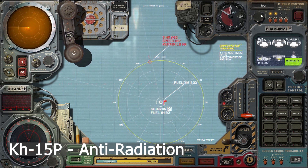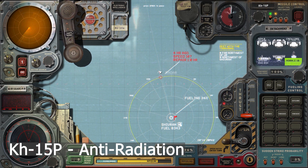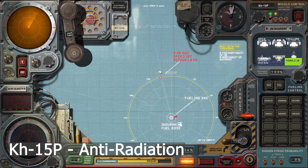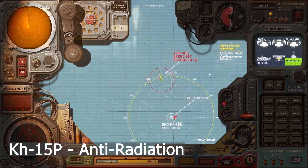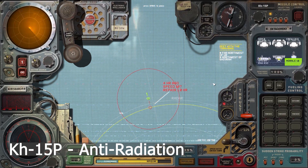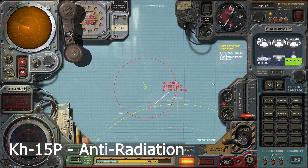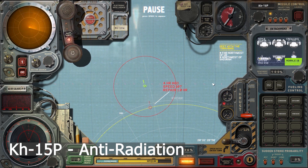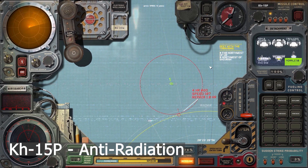Let's talk about the KH-15P. This is an anti-radiation missile — basically it will search for any radar emissions when it activates. Be careful, because if you activate this one too close to yourself, it will do a 180 and come straight back at you. So I sent the missile off, it activates, then it looks for any radar emissions on its path.